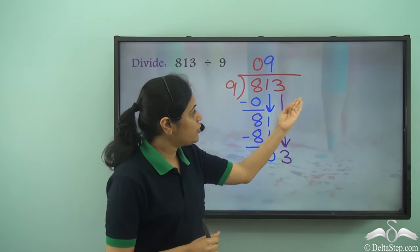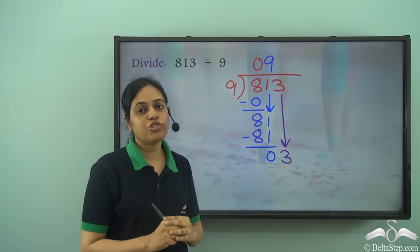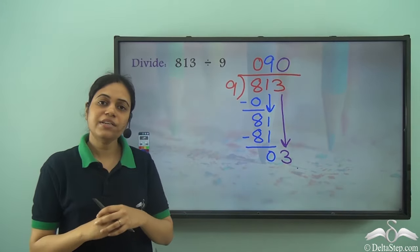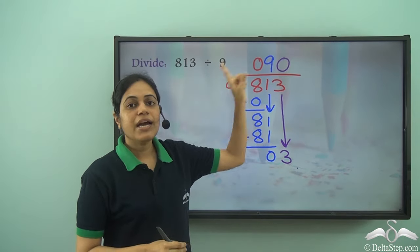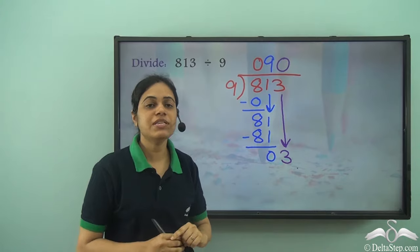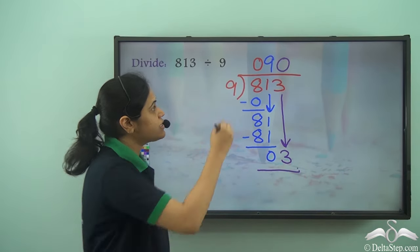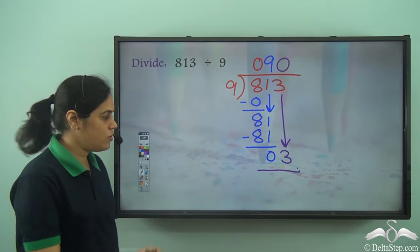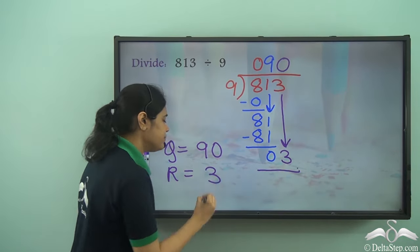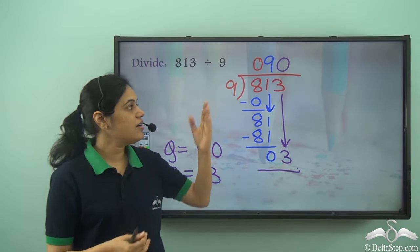We do not have any more digits to the right of 3 which I can bring down, because 3 is the ones digit. So my division has to stop here. But there is something we are missing — I need to write a 0 here because I need to have a digit in the quotient for every digit in the dividend. Since 9 goes into 3 zero times, I write a 0 here and 3 is my remainder. The quotient is 090, that is 90, and the remainder is 3. This is how you can divide any number by a 1-digit number.